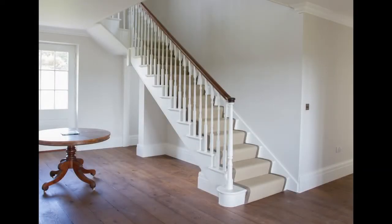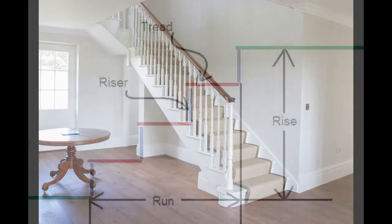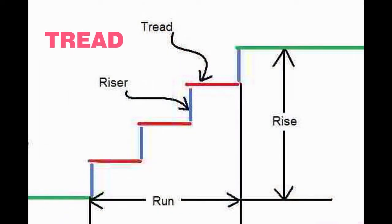There are different parts of stairs, each having their own function. First, we are going to see what is tread. The upper horizontal portion of the step over which our foot is placed during going up and down in a stairway is known as tread.